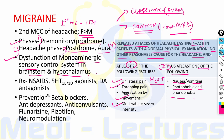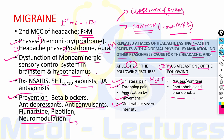Treatment includes NSAIDs, 5-HT1B/1D agonists known as triptans, and dopaminergic antagonists including metoclopramide and prochlorperazine. Long-term prevention can be done with beta blockers like propranolol, antidepressants like amitriptyline, anticonvulsants especially valproate and topiramate, calcium channel blockers like flunarizine, and pizotifen — a serotonergic drug recently approved. Neuromodulation with single-pulse transcranial magnetic stimulation can also be done for long-term prevention.